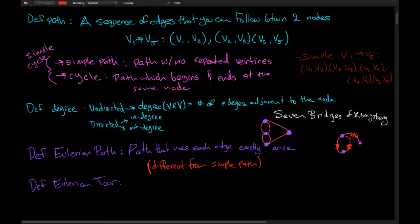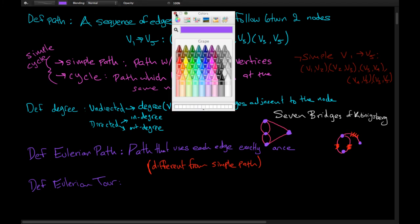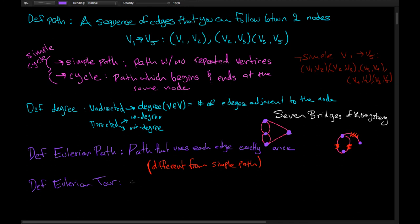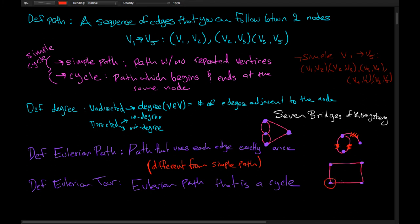An Eulerian tour is just an Eulerian path that is also a cycle — you use every single edge and you start and end at the same node. So you start in your hometown, go to all the nearby towns, burn down all the bridges, and still manage to end up back in your own hometown.